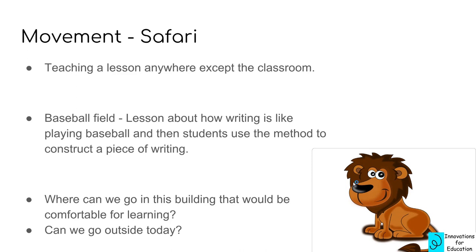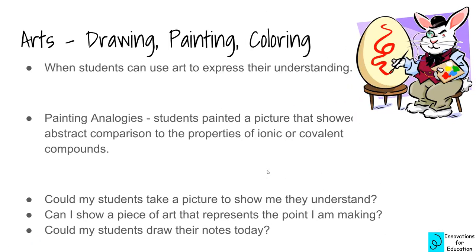For the arts hook, students use any kind of art to express their understanding. The example is a paint analogy: students painted a picture showing an abstract comparison to the properties of ionic or covalent compounds. This can be used for any concept. Ask yourself: could my students take a picture to show they understand? Could I show a piece of art that represents the point I'm making? Could my students draw their notes today? If you haven't heard of sketch notes, look it up — kids love it.